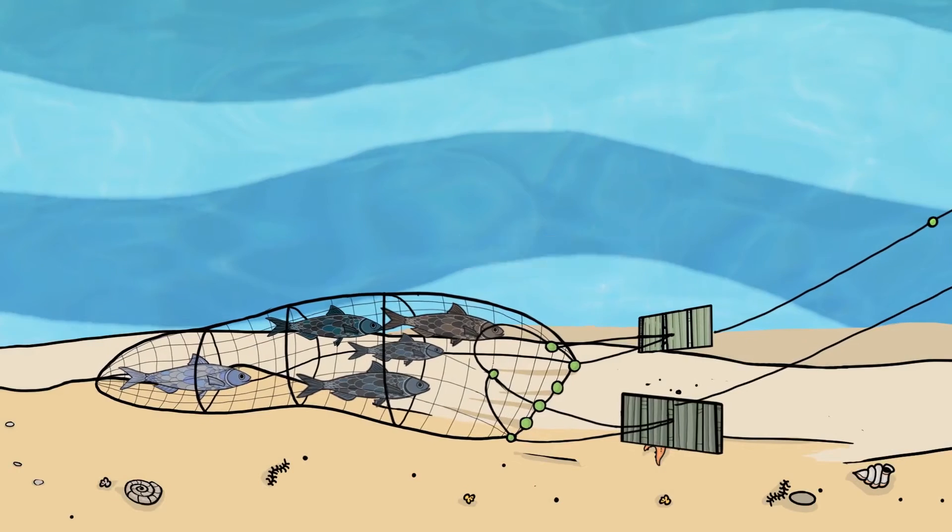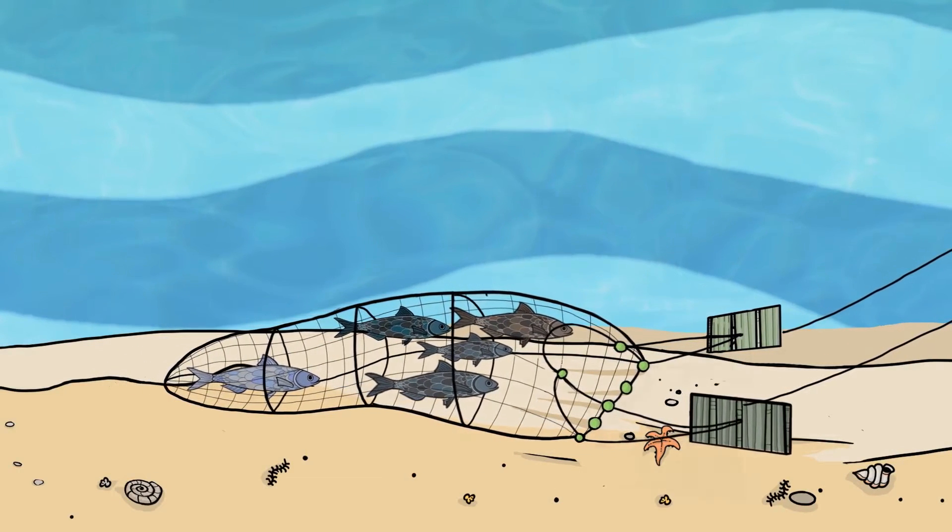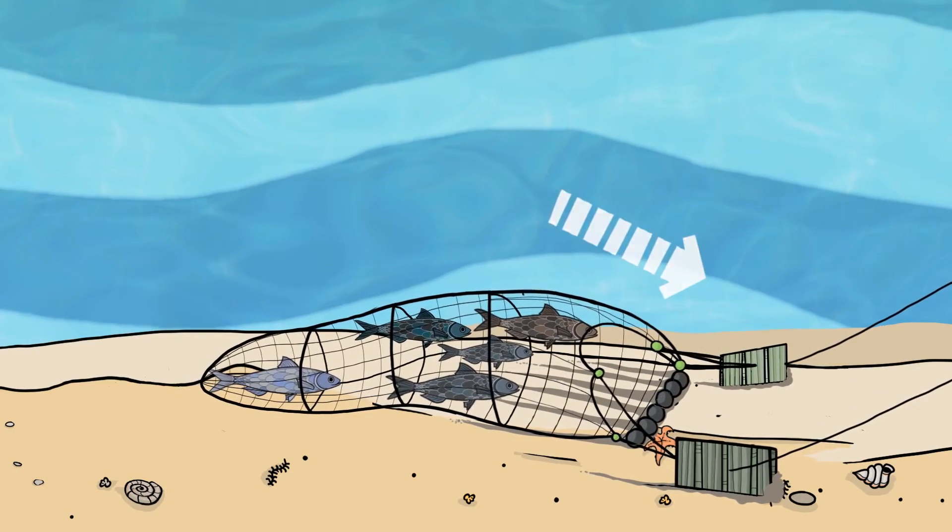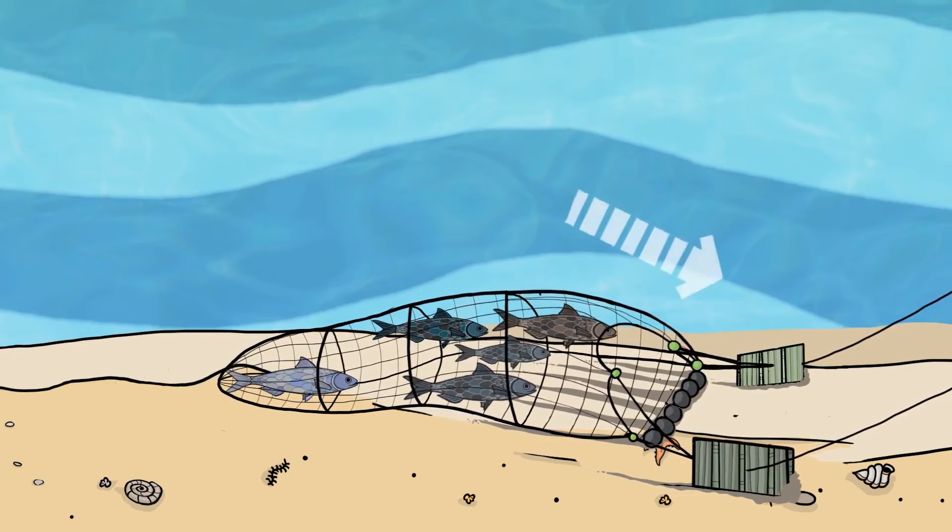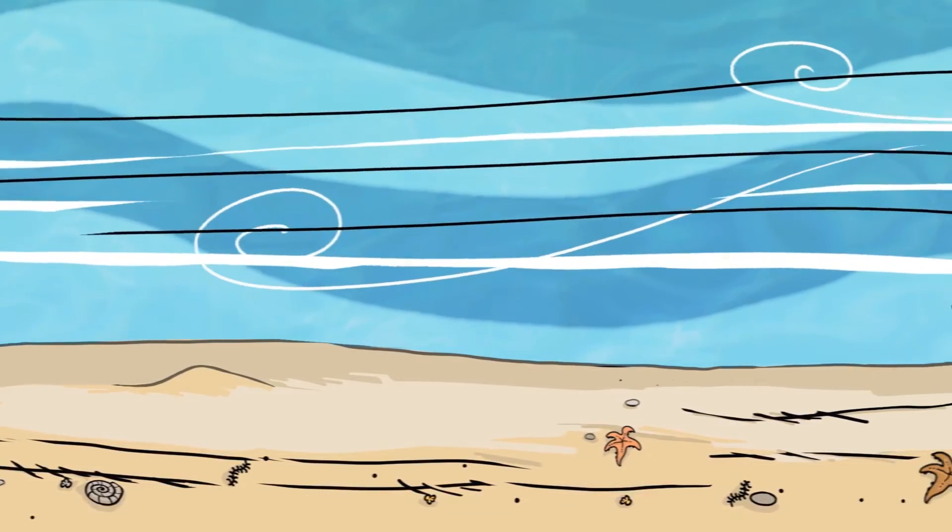Bottom trawls, on the other hand, can be used on or above the seabed to catch bottom-dwelling fish. They can vary in size and weight and have varying impacts on the seabed. The impact also depends on where that particular type of fishing gear is being used.